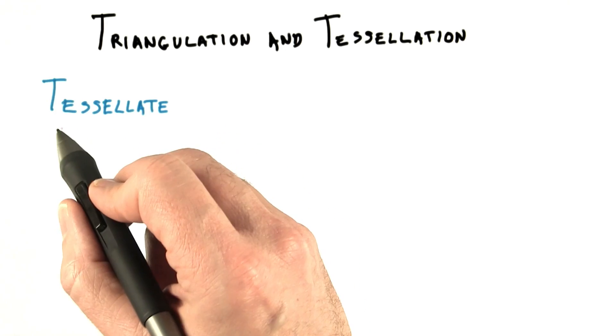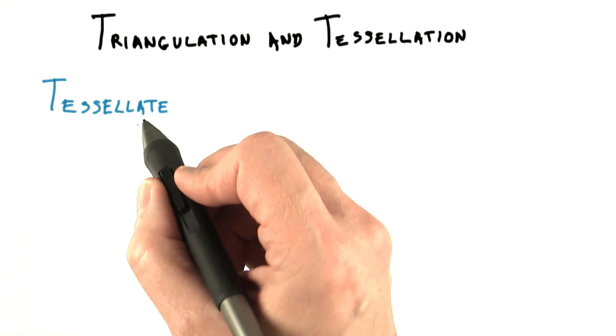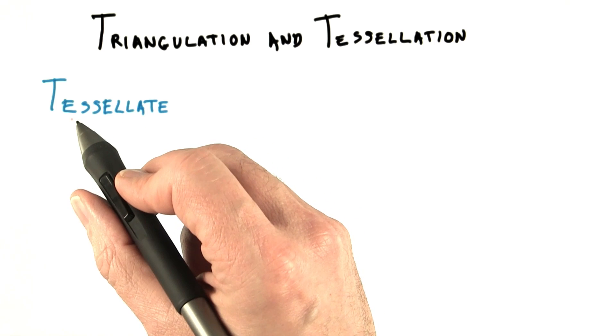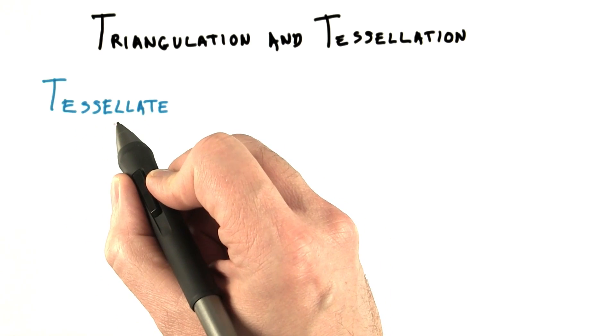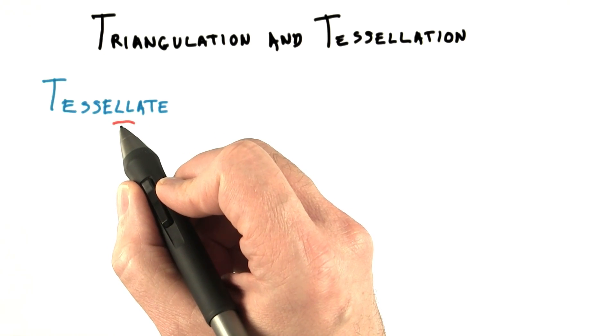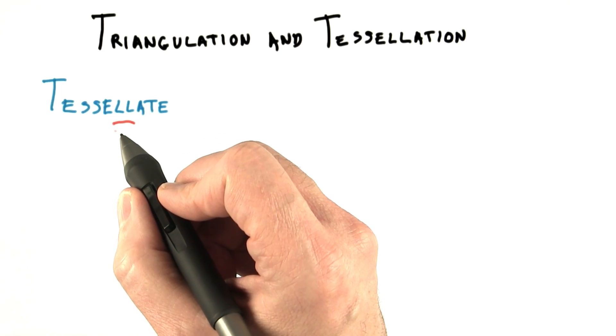I'm going to start this lesson by noting that tessellate is the most misspelled word in computer graphics. So give it a good look and think of doubling every letter that you can when you spell it. Yes, two L's looks weird to me too, but that's how it works and I've forced myself to spell it correctly.